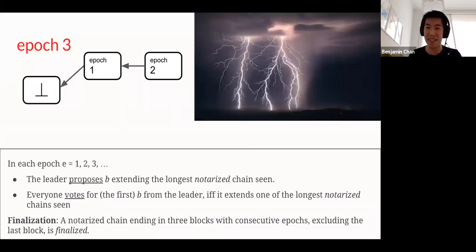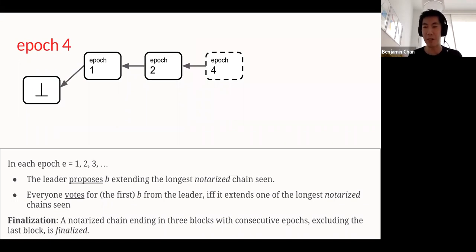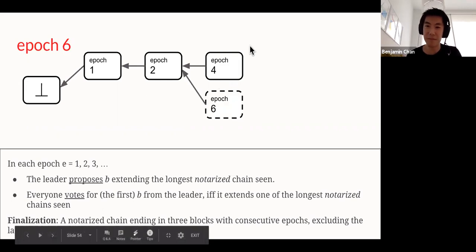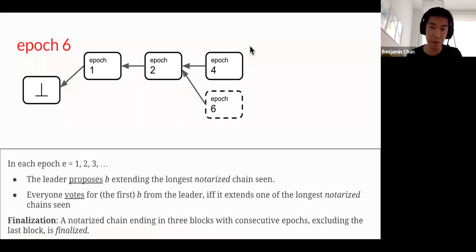Let's say in epoch 3, a calamity strikes, and the global internet goes down, so no progress is made. Let's say in epoch 4, the internet recovers and our leader again proposes a block, people vote for it, and those votes at least get delivered to us. But let's say in the midst of all that, in epoch 5, the internet went down again and recovered in epoch 6. But maybe our epoch 6 leader, they never saw the fact that our epoch 4 block here was notarized. Maybe the votes just got lost in the mail. So they propose a new block that extends our epoch 2 block. In fact, maybe all the voters didn't see these votes either that were lost in the mail, so they also vote for that block. So we can have a fork in our network.